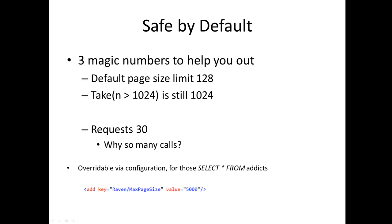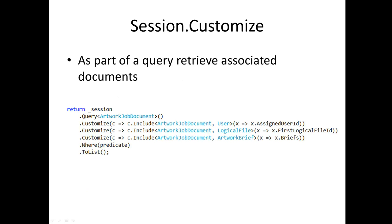The third magic number is 30 requests. Raven will tell you: 'What are you doing? You just in one session asked me 30 times for something — are you sure you know what you're doing?' And the answer probably is no. So if I had left off the custom include and further down in my processing tried to operate on those, Raven's going to go 'I didn't get those for you, let me go get them.' After 128 results, on the 30th round trip in that collection, you'll get an exception saying 'you've just hit me 30 times, I think you're doing something wrong.'